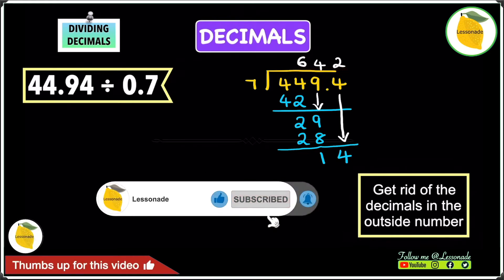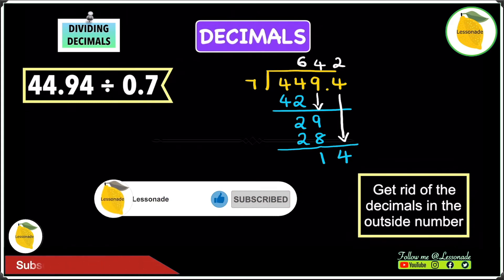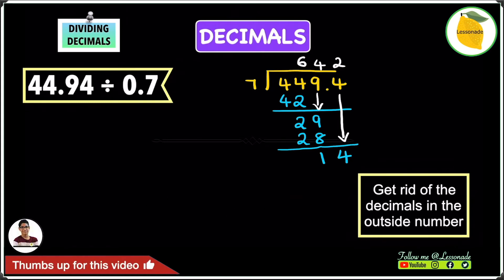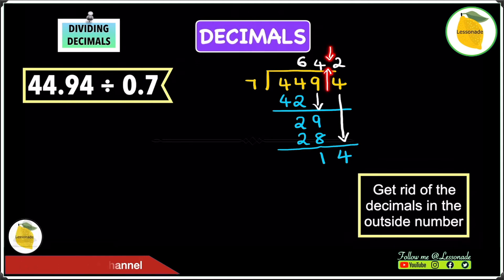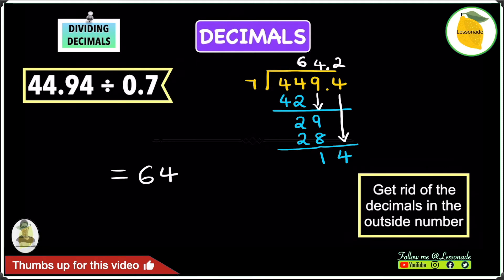The next step is to add the decimal point. When dividing decimals, all you have to do is move the decimal point straight up — it slots in between the 4 and the 2, giving you a final answer of 64.2.